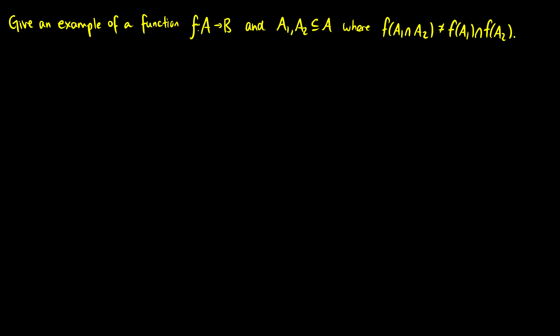So what I mean here is if I take the intersection of the two subsets, it gives a different set of values than if I take the function in each of the subsets individually, and then take the corresponding values and take the intersection.